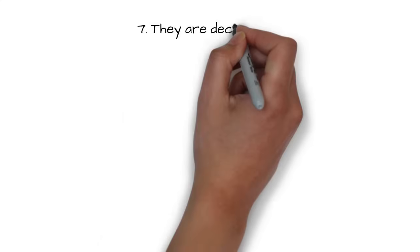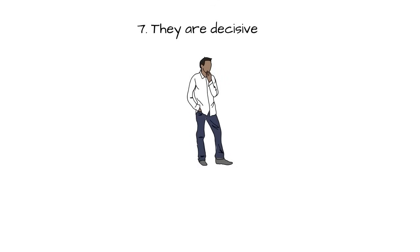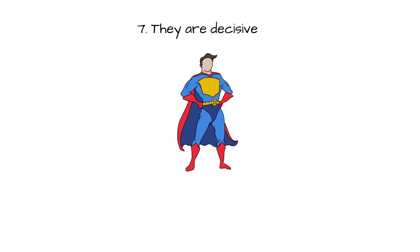And lastly, number seven, they are decisive. A lot of times leaders have to make decisions that they are not sure of. But once they have enough evidence to suggest making that decision, they stick with it and they do it with confidence.